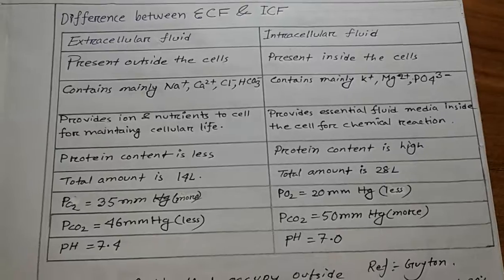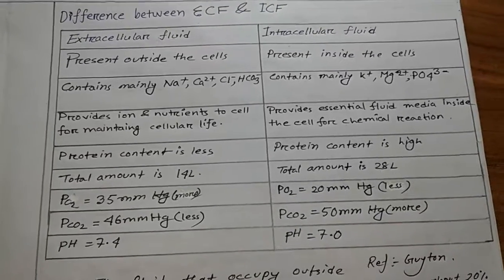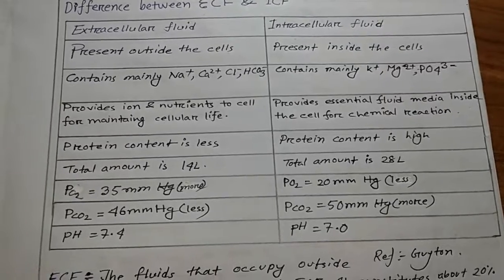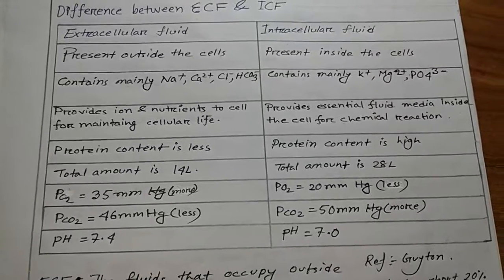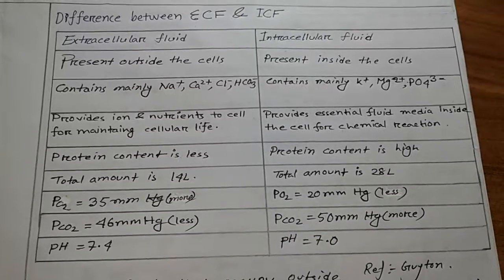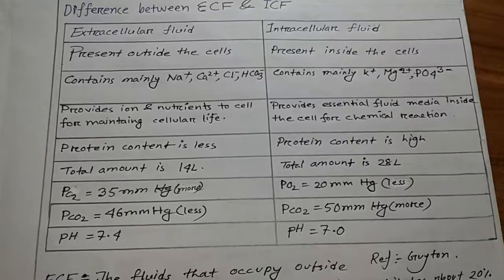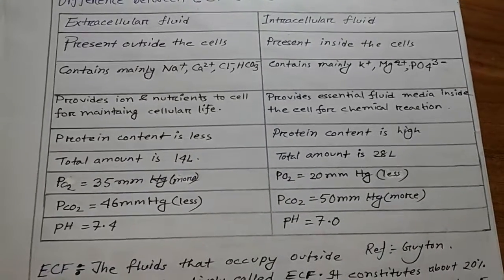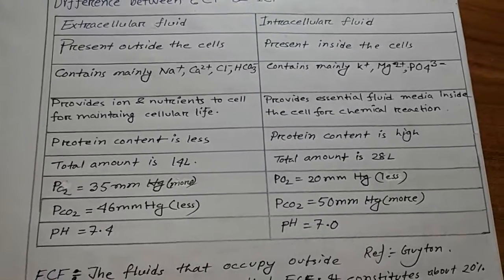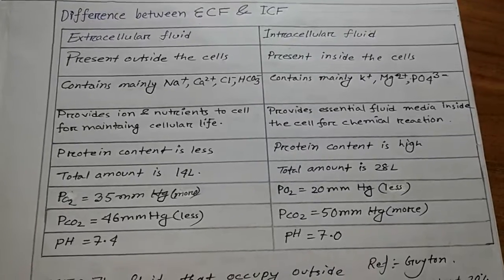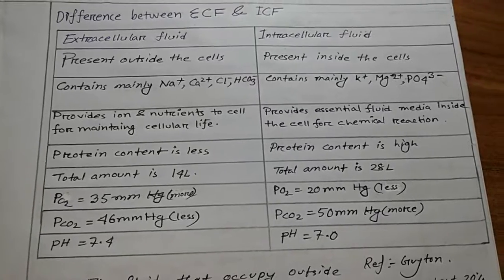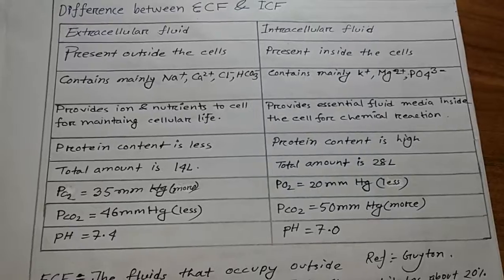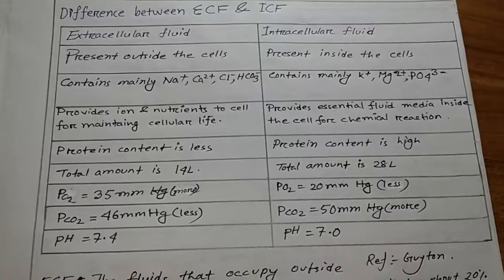Difference between ECF and ICF. ECF is present outside the cell; ICF is present inside the cell. ECF contains mainly sodium, calcium, chlorine, and bicarbonate. ECF provides ions and nutrients to the cell for maintaining cellular life; ICF provides the essential fluid media inside the cell for chemical reactions. Protein content in ECF is less; protein content in ICF is high. Total amount of ECF is 40 liters; total amount of ICF is 28 liters. PO2 in ECF is 35 mmHg; PO2 in ICF is 20 mmHg. PCO2 in ECF is 46 mmHg; PCO2 in ICF is 55 mmHg. pH of ECF is 7.4; pH of ICF is 7.